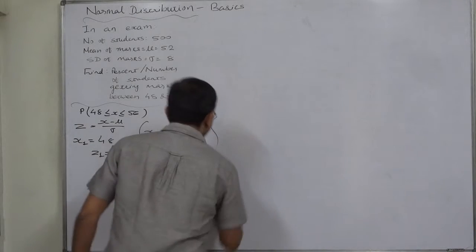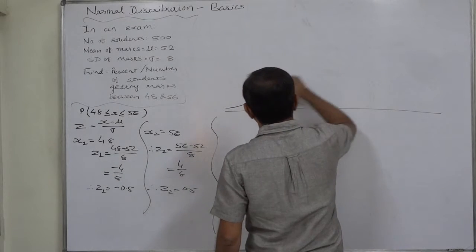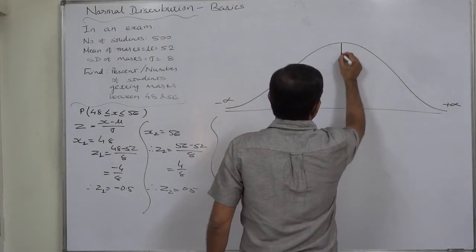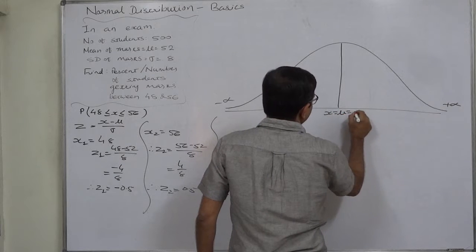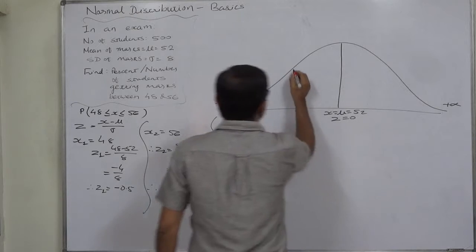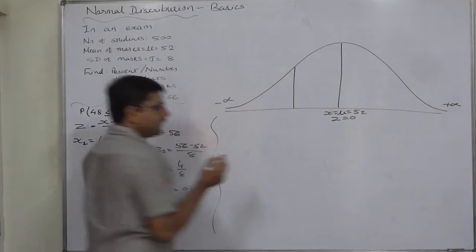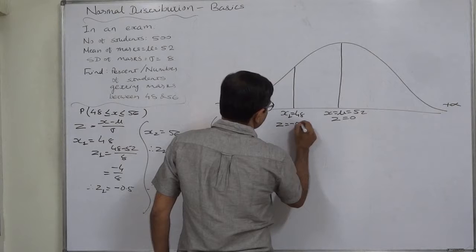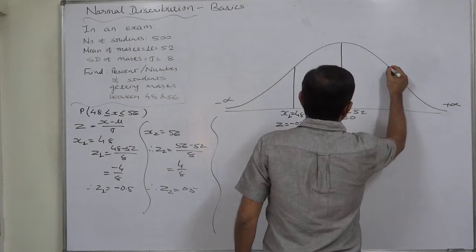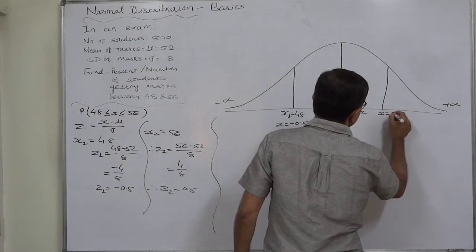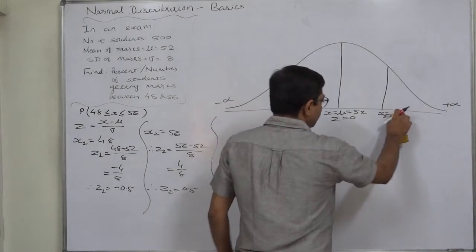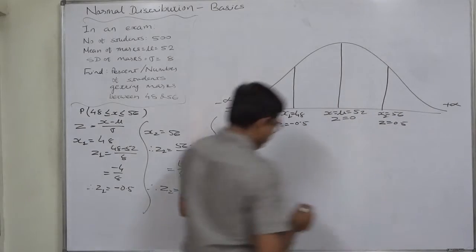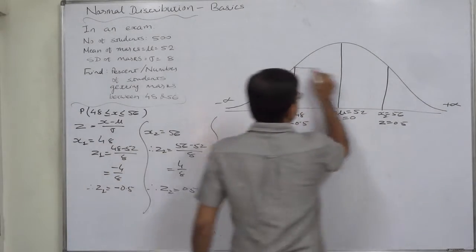Let us draw the sketch. X is exactly equal to the mean, that is 52, so Z = 0 at the center. The first value X = 48 is less than the mean, so it falls in the left-hand side region and Z = −0.5. The upper limit X = 56 is greater than the mean, so it falls in the right-hand side region and Z = +0.5. We are interested in the area between 48 and 56.